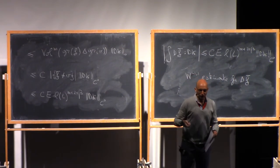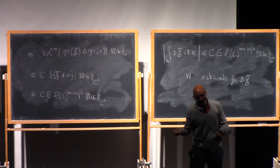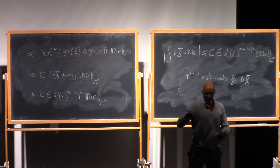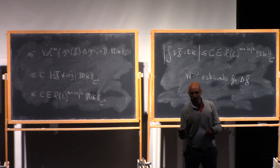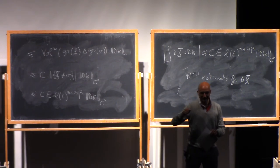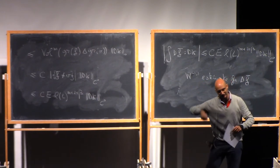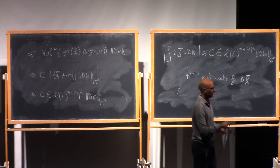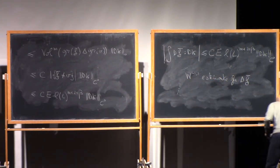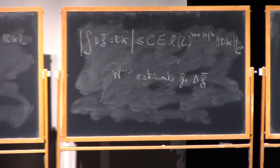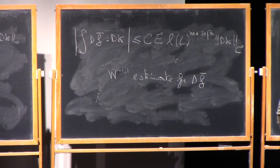If I want the W^{−1,1} estimate, I test with some test function, and one derivative falls on the test function — that's for the minus 1. And since I'm using a C0 estimate on one side, by duality this will be like an L1 estimate on the other. So this is just to sound fancy. Now we are almost done. I'm not going to show you the higher derivative estimates on the Laplacian of F bar, but I can show you right away the estimate on the Laplacian of F bar.